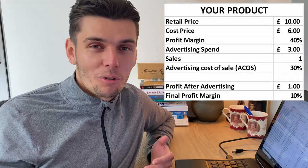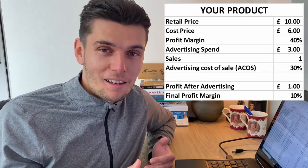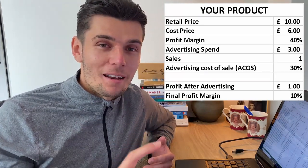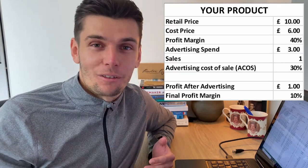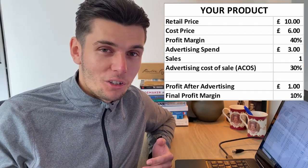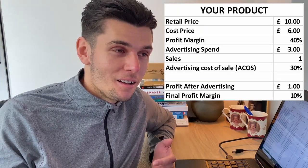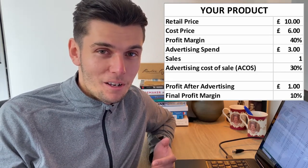The ACOS is essentially the percentage of the retail price that you've spent on advertising to acquire that sale. So if your product is £10 and you spent £3 on advertising, you have an ACOS of 30%. Keep this in mind relative to your profit margin — if your profit margin is 40% and your ACOS is 30%, your real profit margin on that sale is only 10%. Your ACOS is typically higher when you first launch because you haven't got many reviews yet.